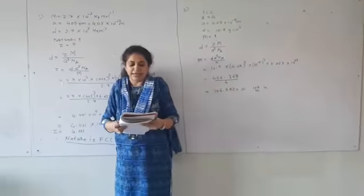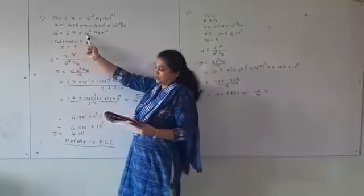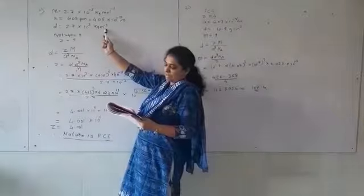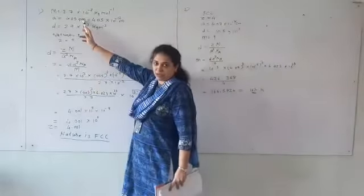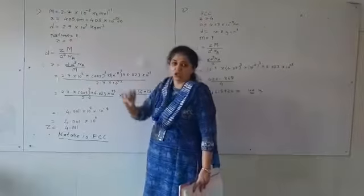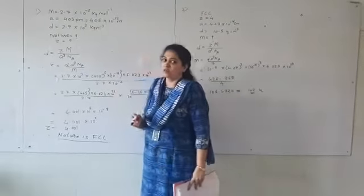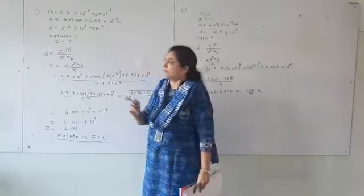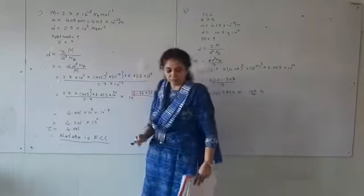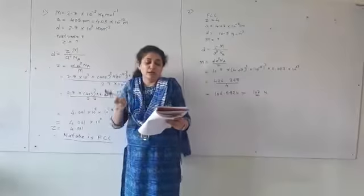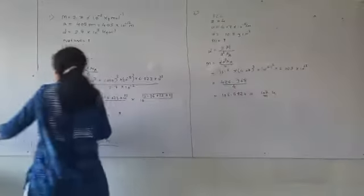The density is given as 2.7 × 10³ kg per meter cube. Now the edge length is expressed in picometer and density in meter cube. So I am converting picometer in terms of meter. 1 picometer is 10⁻¹² meter, so 405 picometer will be 405 × 10⁻¹² meter. And what is the nature of unit cell? That is our question. So let us solve it.